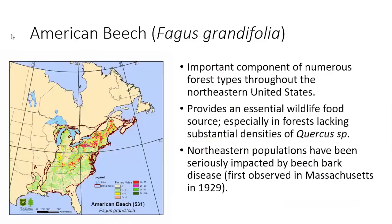I'll briefly talk about American beech. I know this audience is quite familiar with this species. It's an incredibly important species here in western New York, meaning it has a relatively high frequency and density in a forest. It's very important from a wildlife perspective — it's a masting species. So in forests that tend to lack a lot of oak, it can be an essential wildlife food source.